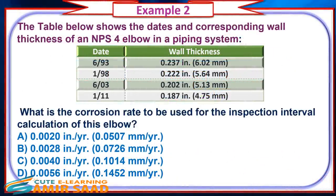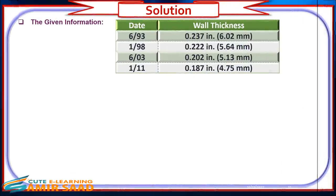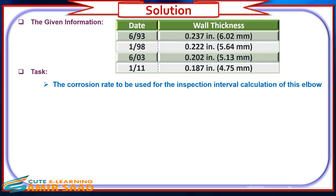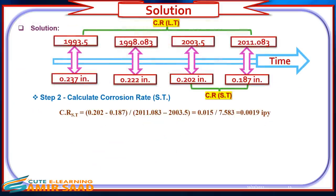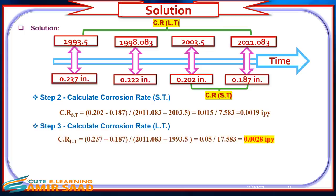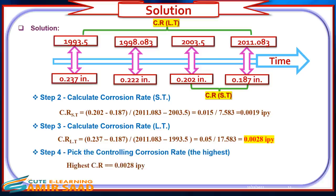Example 2: The table shows the dates and corresponding wall thickness of a nominal pipe size 4 elbow in a piping system. What is the corrosion rate to be used for the inspection interval calculation? Solution: Step 1: Convert months to years. Step 2: Calculate the short-term corrosion rate. Step 3: Calculate the long-term corrosion rate. Step 4: Pick the controlling corrosion rate — the highest. The answer is B: 0.0028 inch per year.